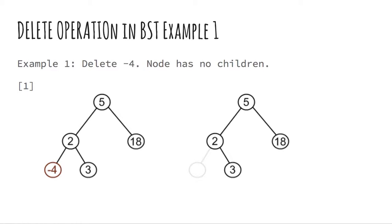Now, let's look at deletion in a binary search tree. Delete has three different cases. Let's look at each one of them with an example each.